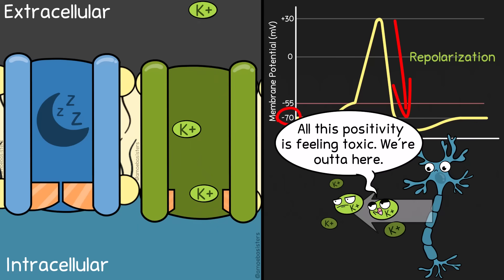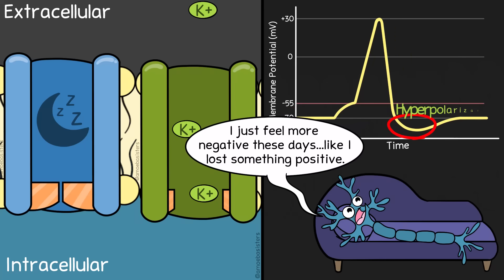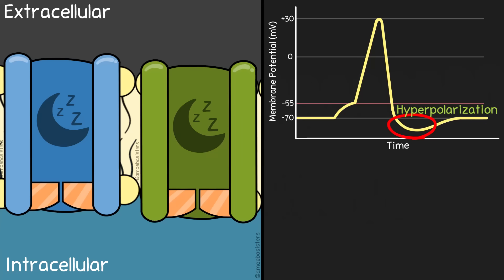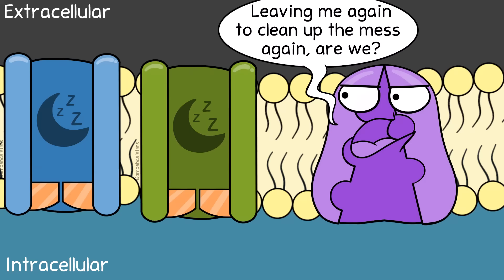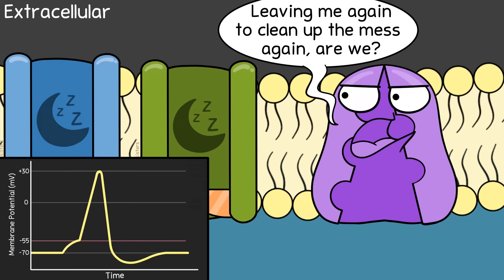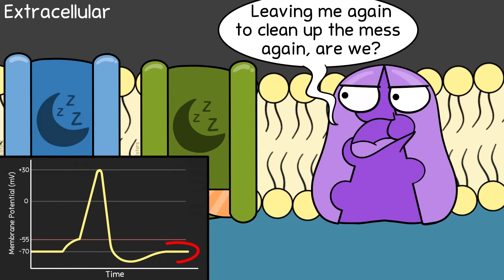However, the membrane potential actually goes beyond resting potential — this is called hyperpolarization, a little undershoot — until those gated potassium channels close. Once they close, with the help of the sodium-potassium pump, which has been continually working throughout, the cell can return to its resting membrane potential.